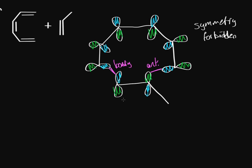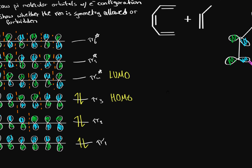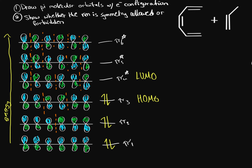We've determined it's symmetry forbidden under thermal conditions. But what can we do to make the reaction go? If we send UV light onto hexatriene, one of the electrons in the HOMO gets excited and jumps to the next highest energy orbital — the LUMO. Now that orbital becomes the new highest occupied molecular orbital, which we call HOMO*, and the next one becomes LUMO*.